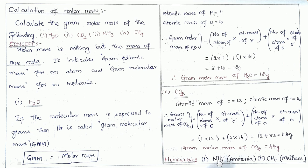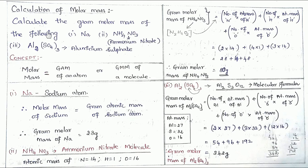We can easily calculate the other two — ammonia and methane — as homework. Now let's go to the next portion of the video, which deals with some different kinds of molecules. We will calculate the gram molecular mass of the following: sodium, ammonium nitrate, and aluminium sulfate. The concept is the same: molar mass is the gram atomic mass of an atom or the gram molecular mass of a molecule.